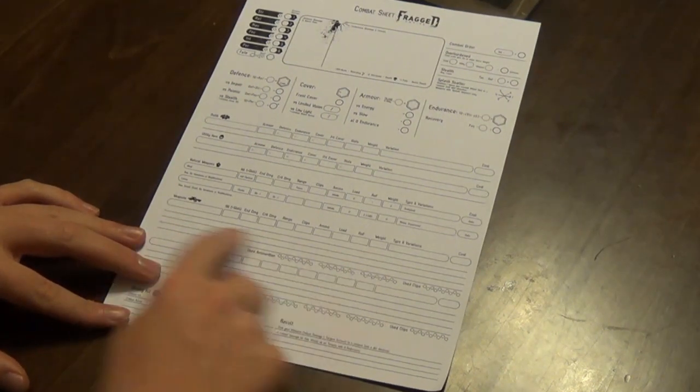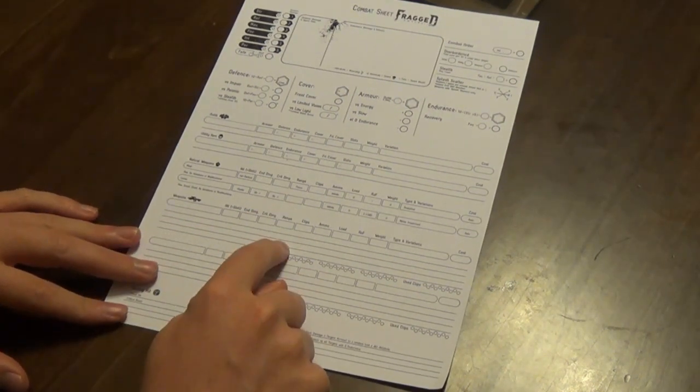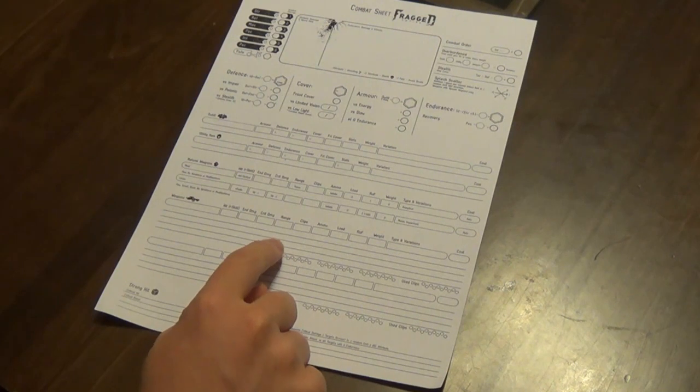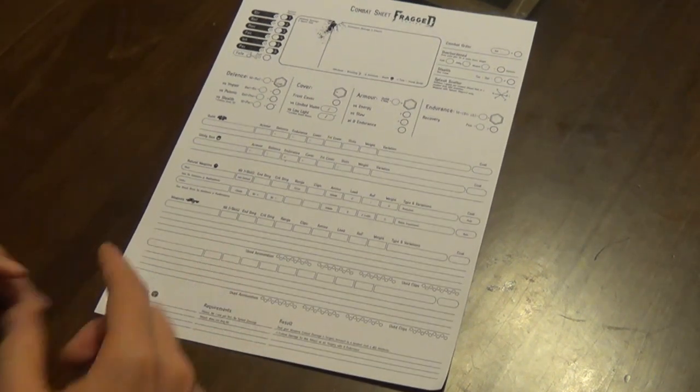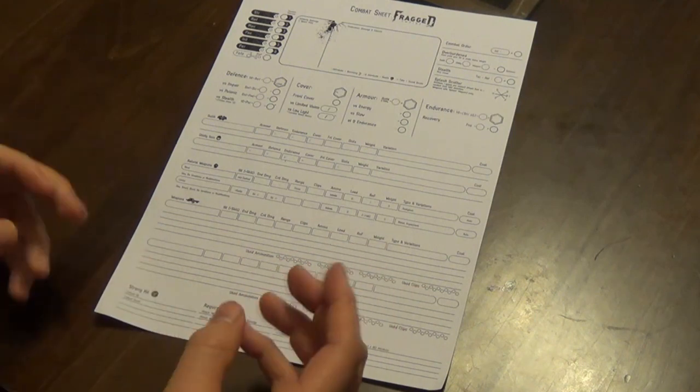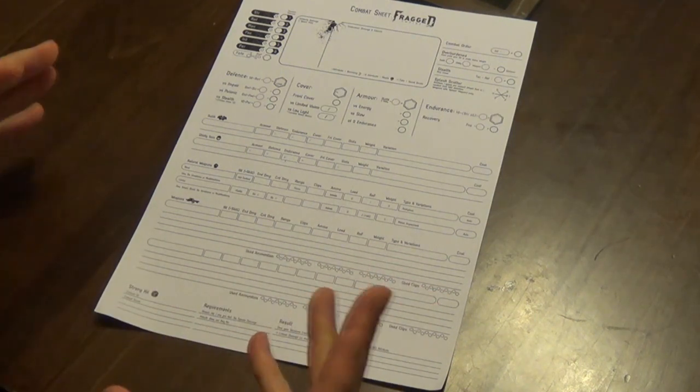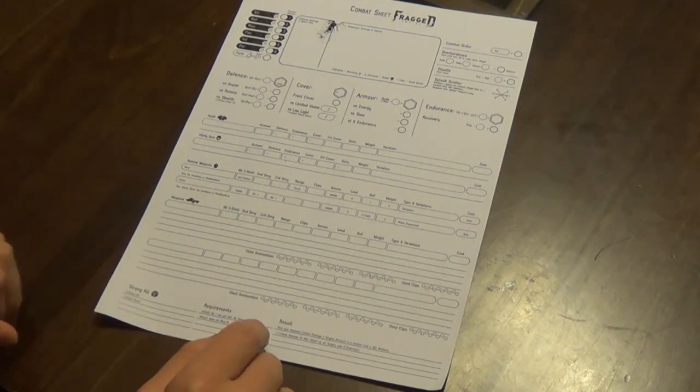Down here you've got an area for notes and keywords. Each weapon will have a list of keywords that will go with it. So for example, is it a biotech weapon or an energy weapon? And that can affect other modifications you can have.